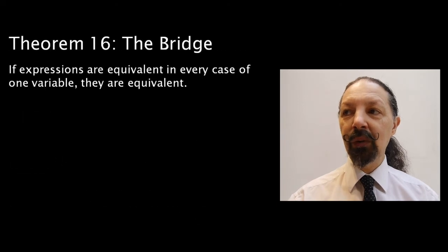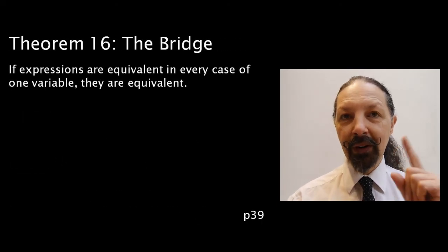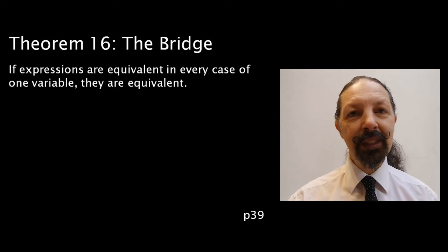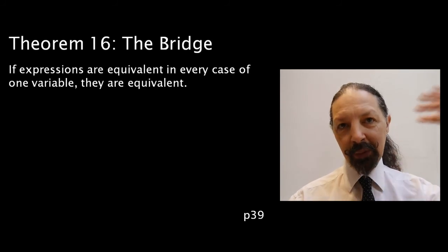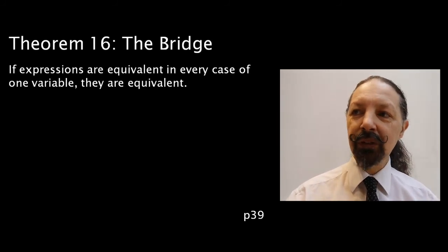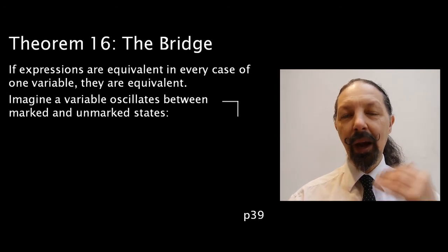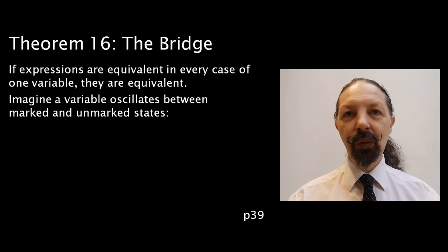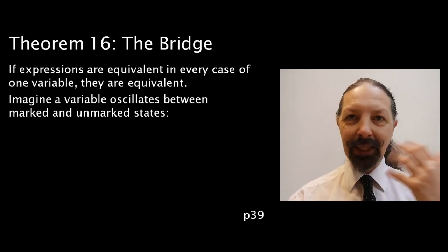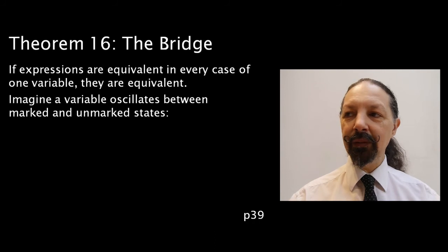If expressions are equivalent in every case of one variable, he says they're equivalent. This is theorem 16, which is the bridge I've been talking about, which takes us to the equations of the second order. Now, you have to imagine a variable oscillating between marked and unmarked states. And this is where a printed version of the book falls short. You have to think in a different way from here on.